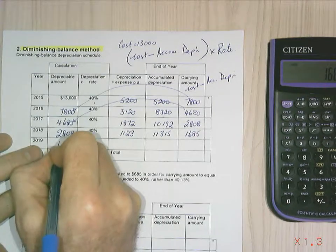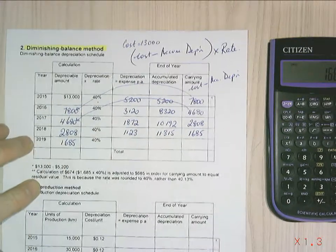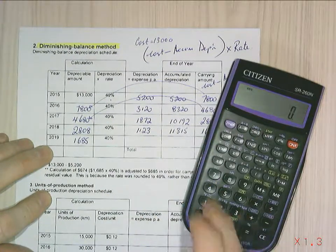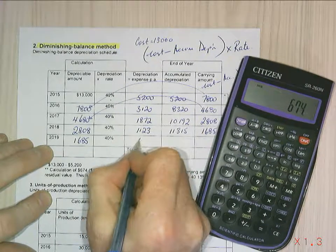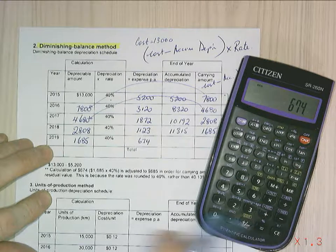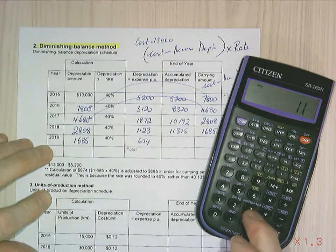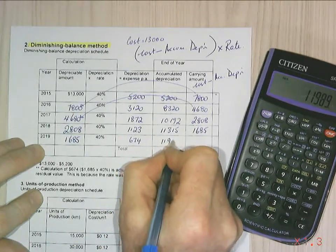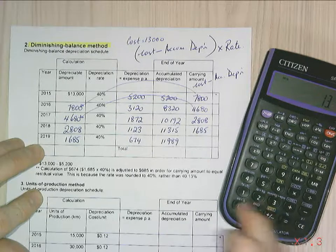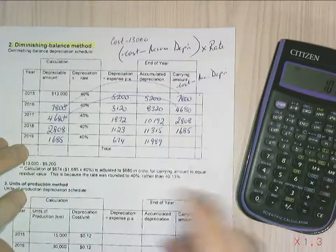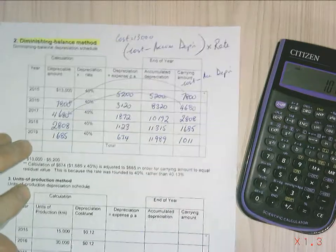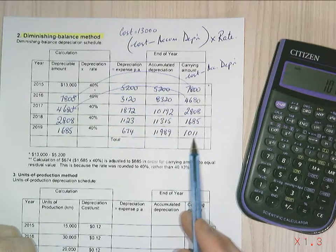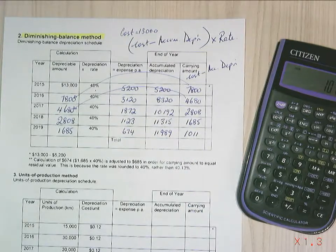Which becomes my opening balance the next period. Continuing along on the method, I'm going to multiply that by 40%, which gives me $674. I'm going to add that to my accumulated depreciation of $11,315, it gives me $11,989. When I deduct from $13,000, it gives me $1,011. So we come back, using a different method, we'll almost come back to the same amount we had with the straight line.